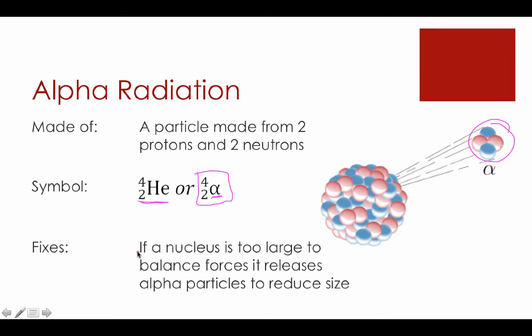Last but not least, what does it fix? Sometimes we have atoms that are simply too large, and it's hard to get the entire atom to have a balance of strong force and repulsion force. As a result, the remedy for this is for the atom to get rid of two protons and two neutrons. It doesn't change the ratio all that much, but it makes the nucleus smaller.